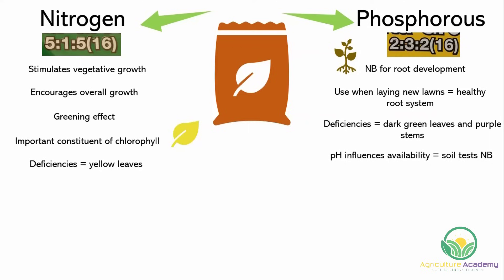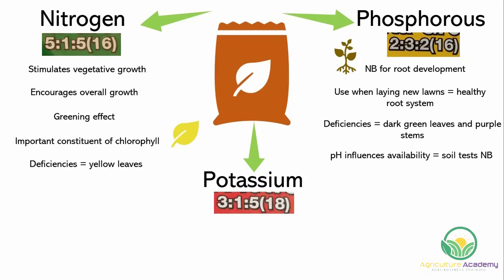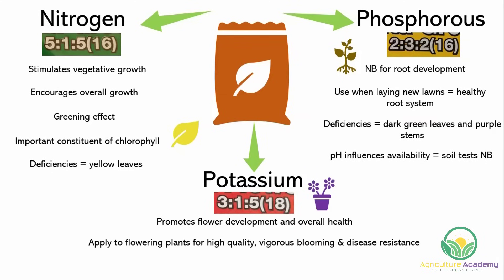Potassium promotes flower development and encourages overall health in plants. These fertilizers can be applied to flowering plants for high quality, vigorous blooming and can even confer a degree of disease resistance in the plants. Malformed or absent flowers or fruit can be a symptom of potassium deficiencies.